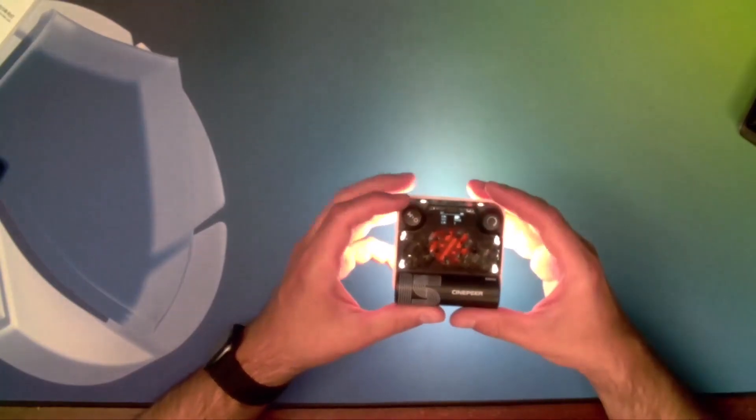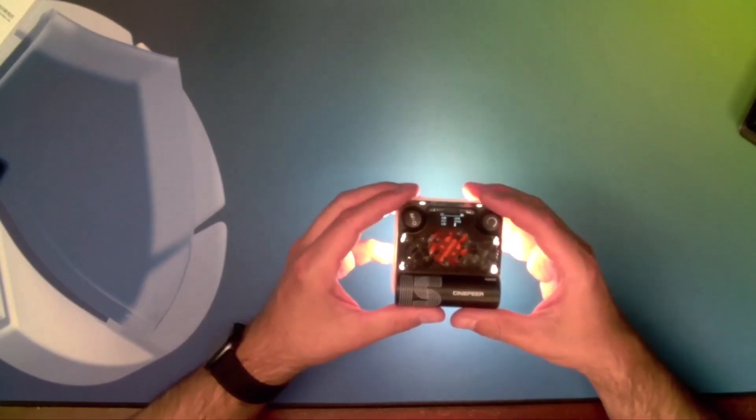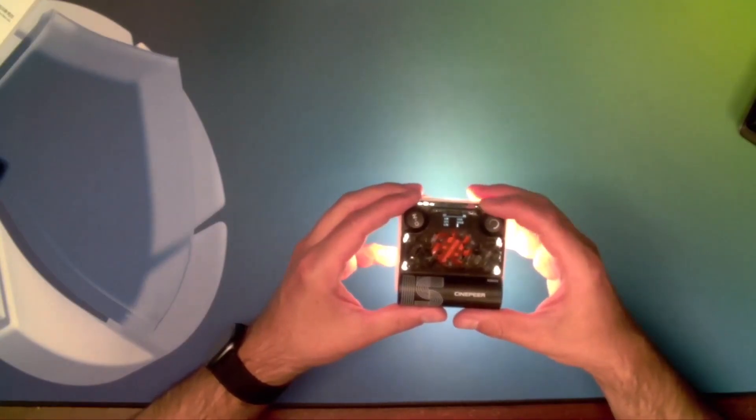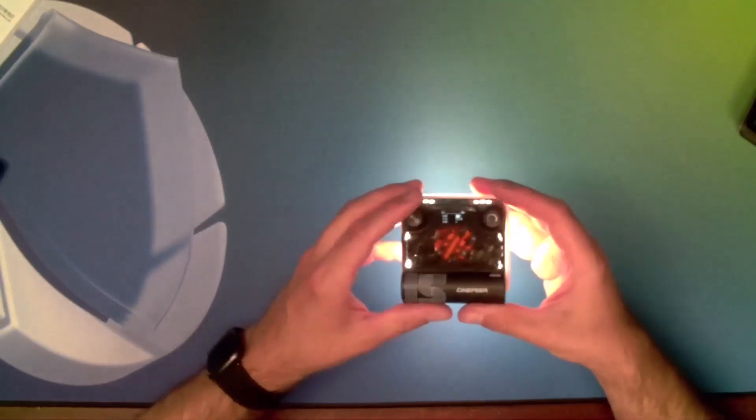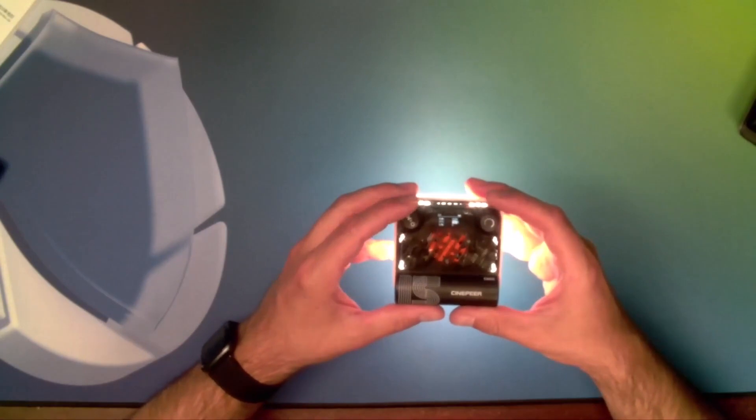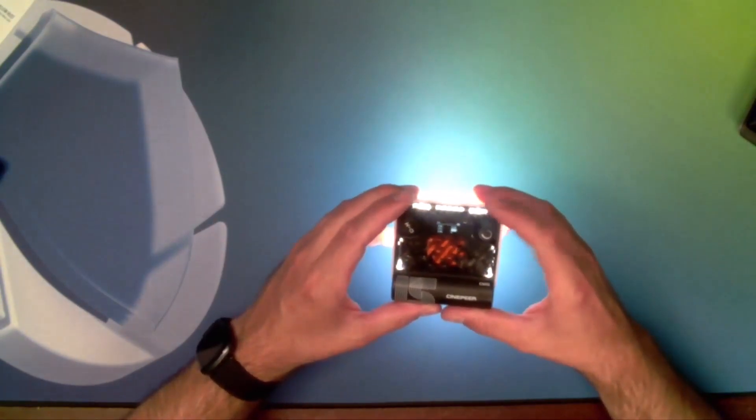To change any of the settings, you simply rotate the left knob to select the field, then rotate the right knob to change the value. Color temperature has a huge range, going from 2500 Kelvin all the way up to 10,000 Kelvin.